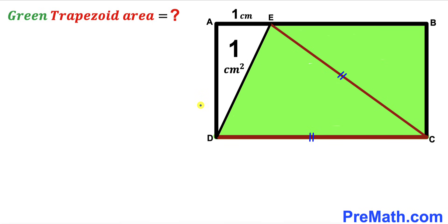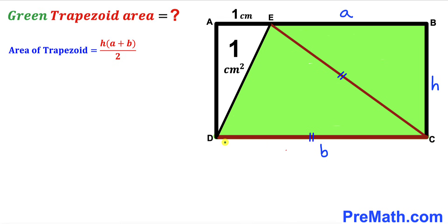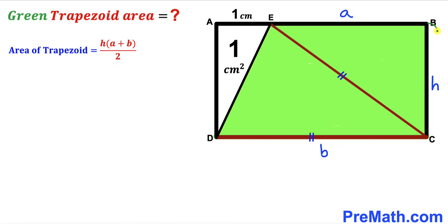Let's get started. Since we are interested in calculating the area of this green shaded trapezoid, let's recall the trapezoid area formula: area equals height h times the sum of bases a and b, all over 2. Here, a and b are the two bases and h is the height of the trapezoid.